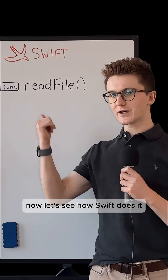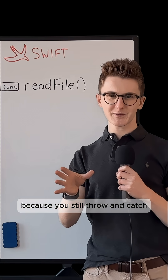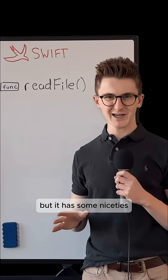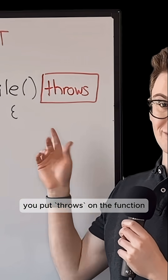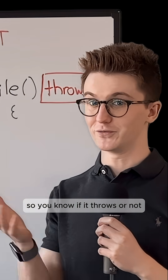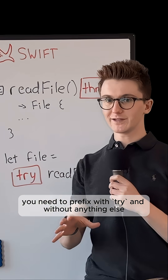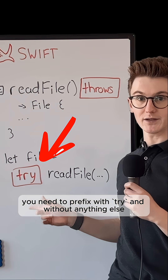Now let's see how Swift does it. It's similar to JavaScript because you still throw and catch, but it has some niceties. In the function types, you put throws on the function so you know if it throws or not. And when you call it, you need to prefix with try.